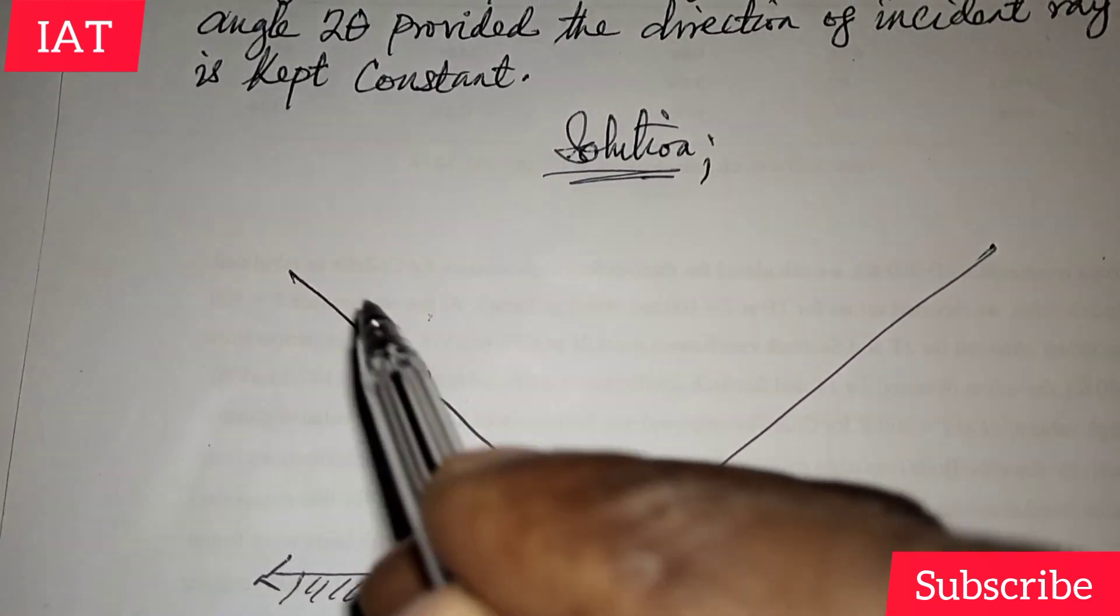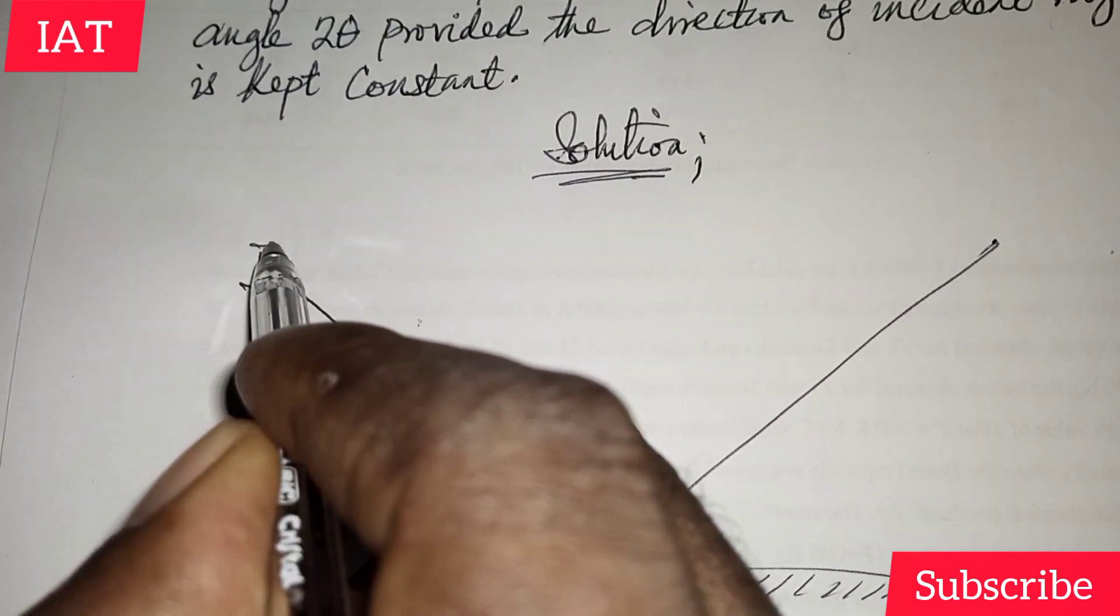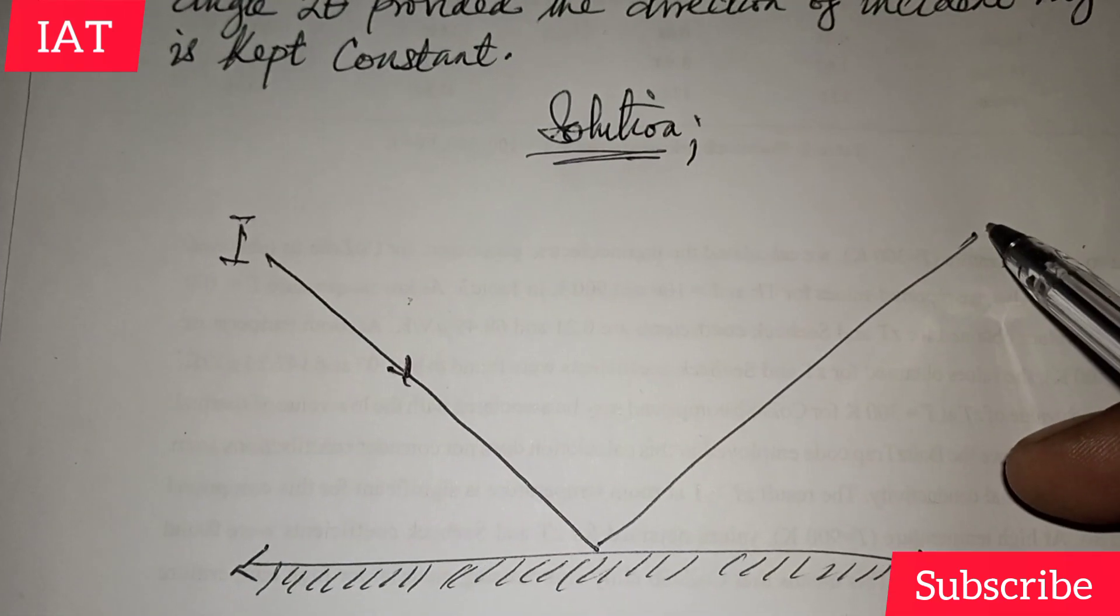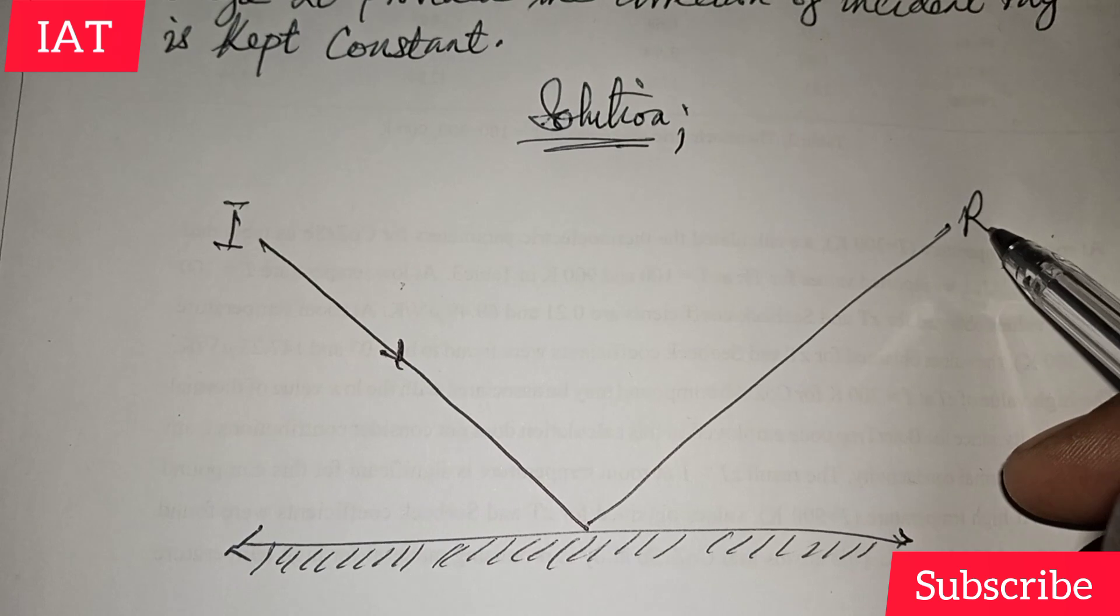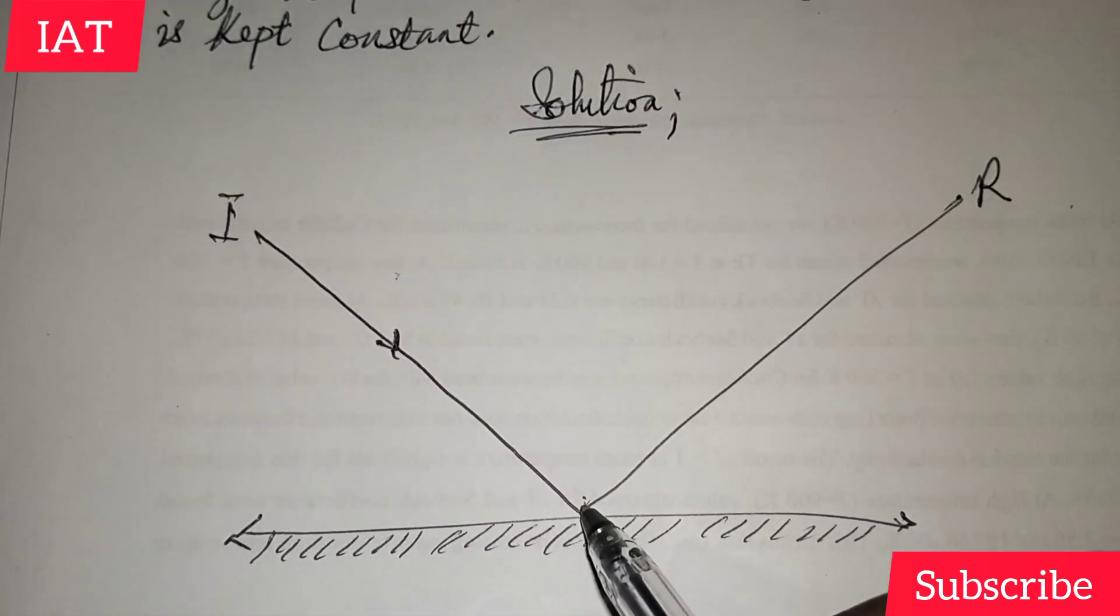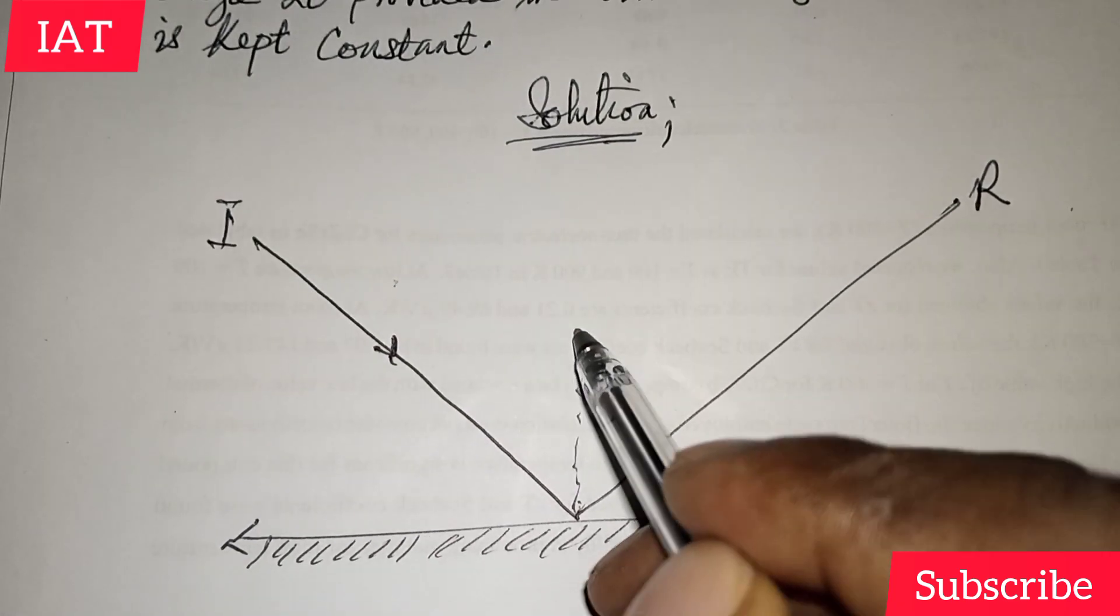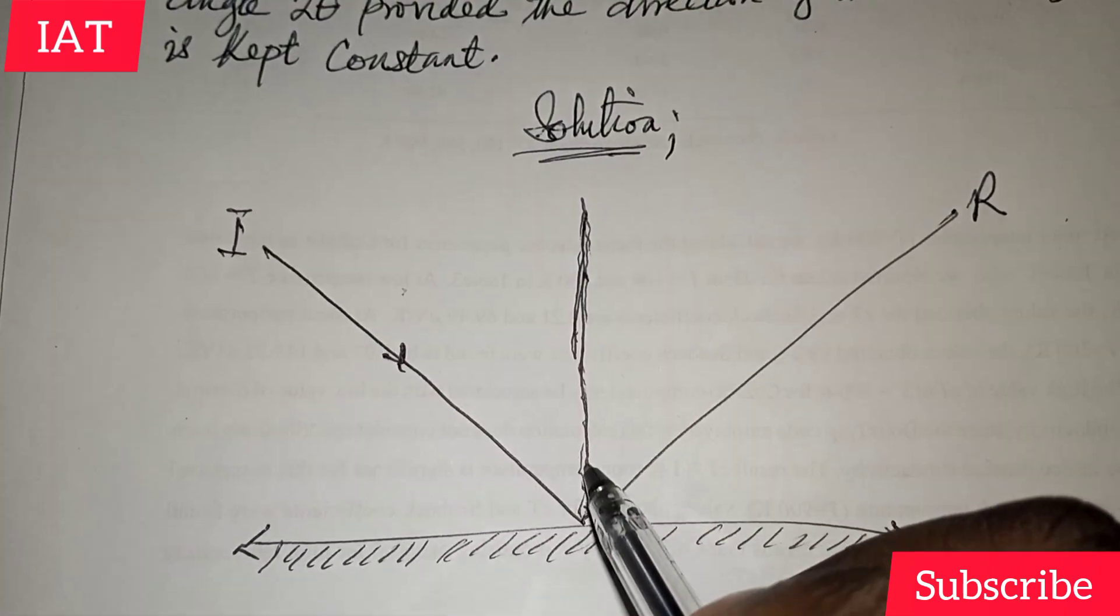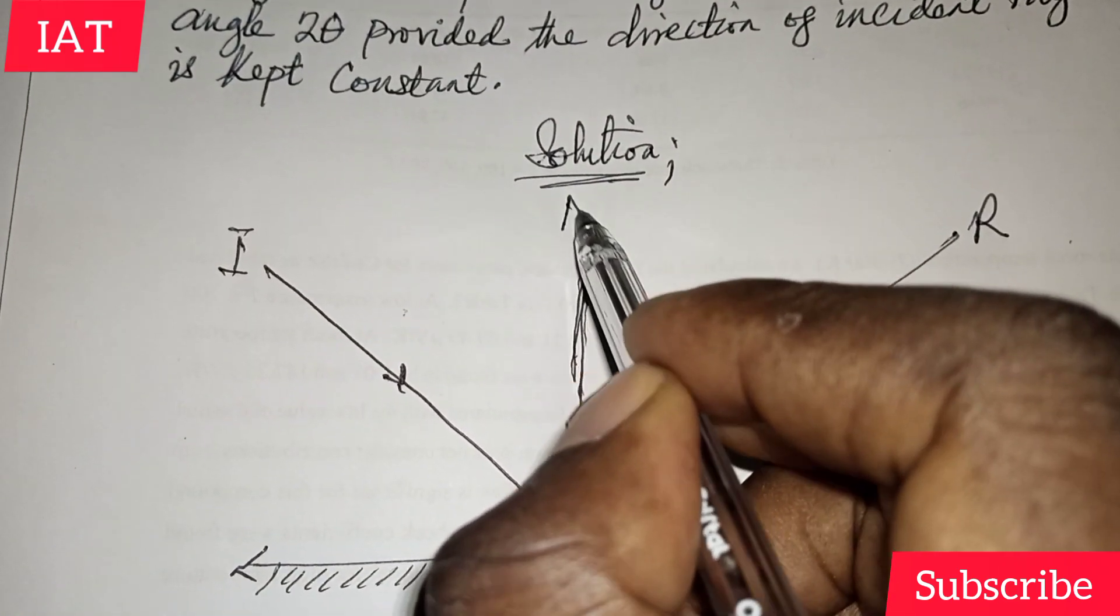So let's have this to be our i, which is the incident ray, and this should be our r, which is the reflected ray. And it will form a normal. It will form a normal here line. So this is the normal N.